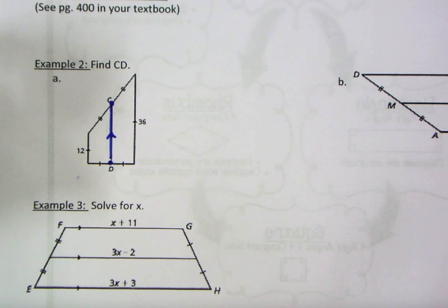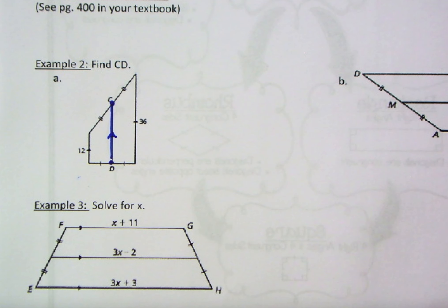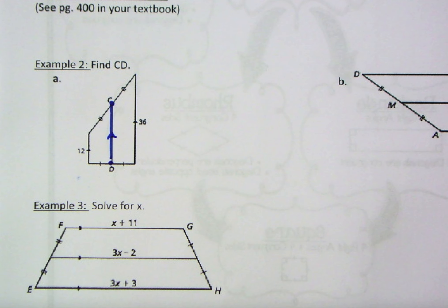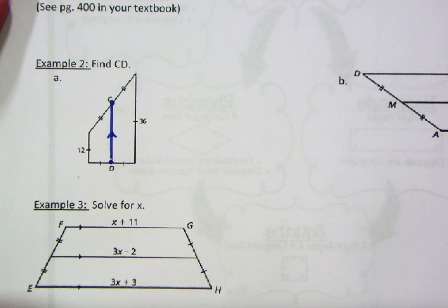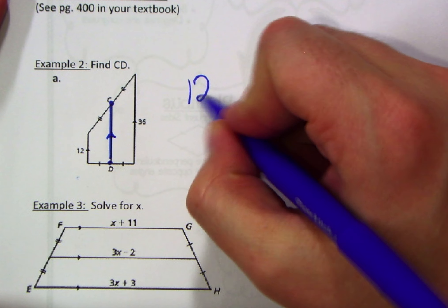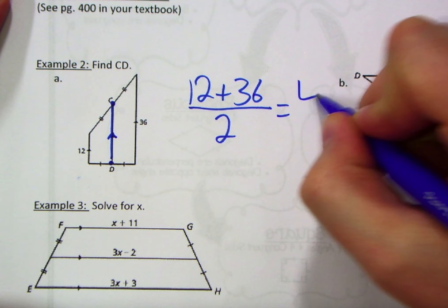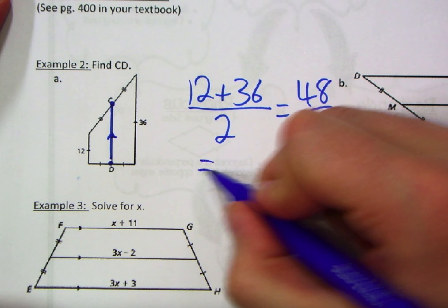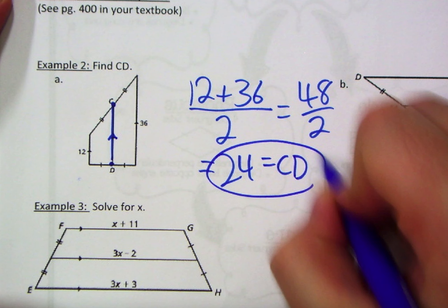The second property is that the mid-segment is always the average of the two bases — it's the number perfectly in the middle of the two base lengths. So with bases of 12 and 36, we add them and divide by 2: 48 divided by 2 equals 24 units. That is the length CD.